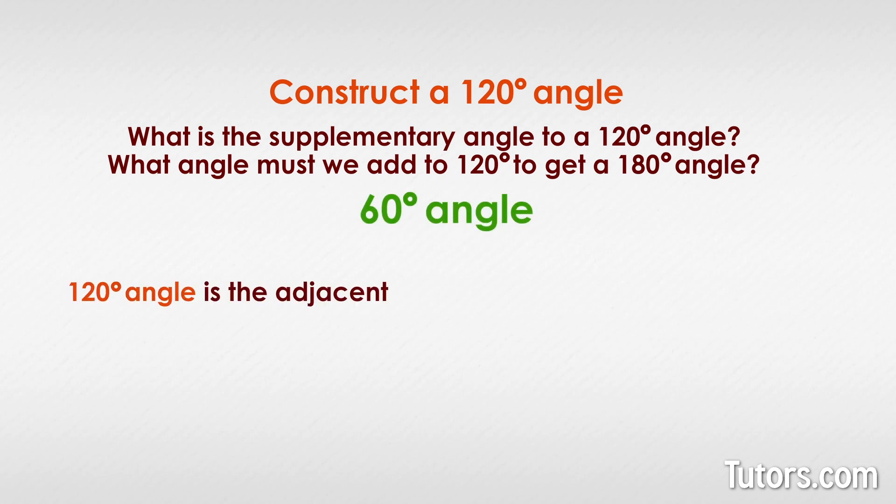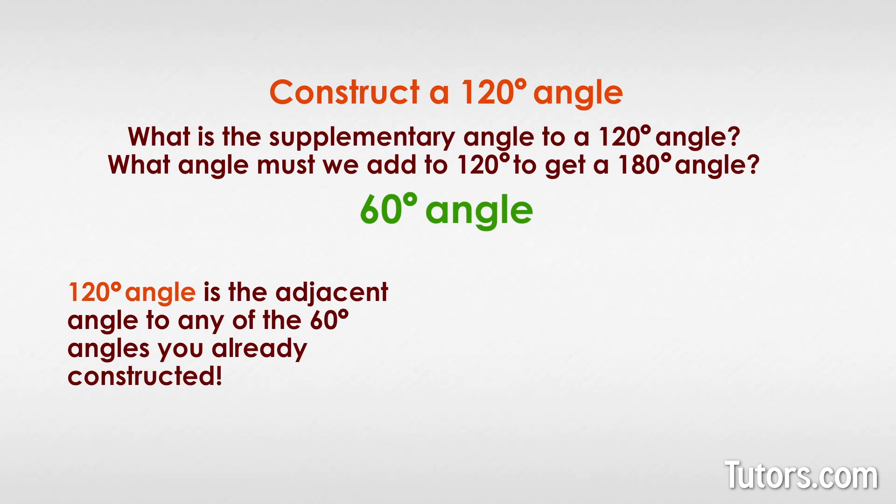A 120-degree angle is the adjacent angle to any of the 60-degree angles you already constructed. To construct your 120-degree angle, construct a 60-degree angle and then extend one of its sides far past the vertex. That angle beyond the 60-degree angle is your 120-degree angle.